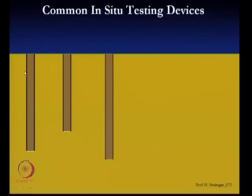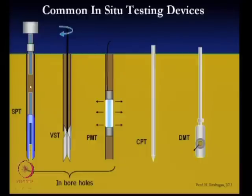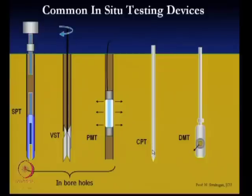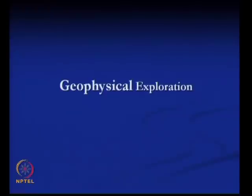In summary: SPT requires a borehole first, then the test is applied; vane shear test applies torque in the borehole at the desired depth; pressuremeter test also requires a borehole; CPT and DMT are pushed directly into the soil. In the next class, geophysical exploration methods will be discussed to determine soil thickness and properties — this will be the last topic for the soil exploration section. Thank you.